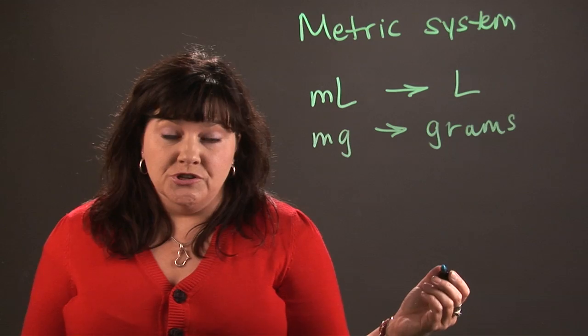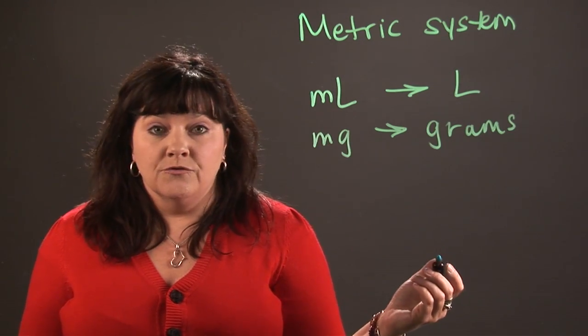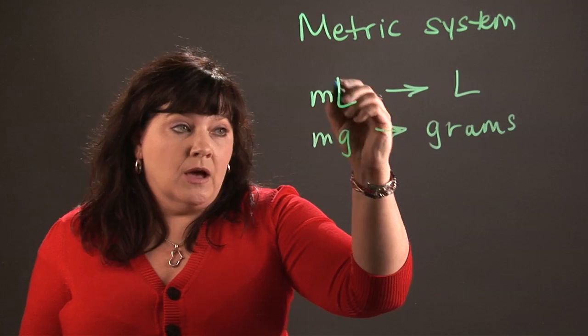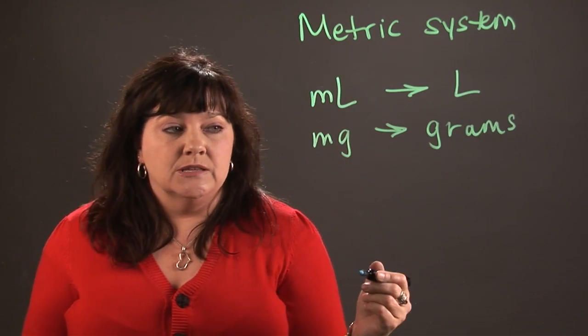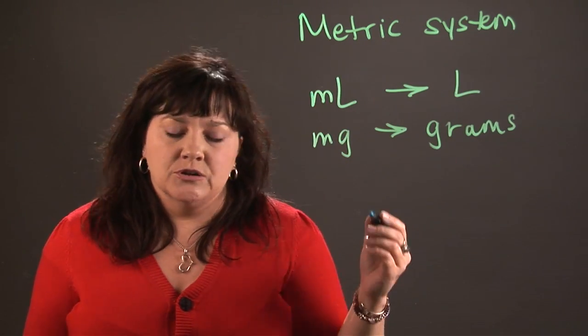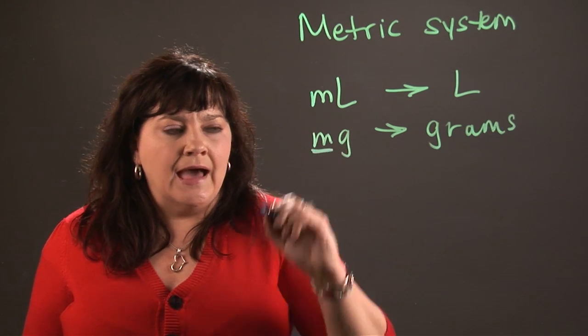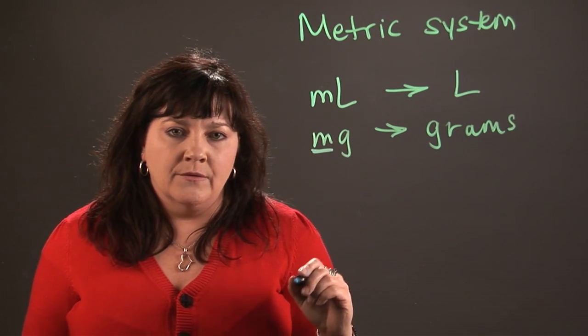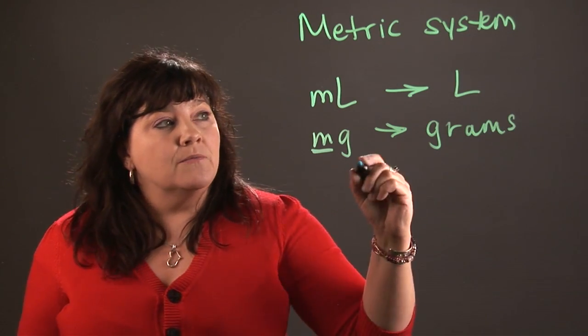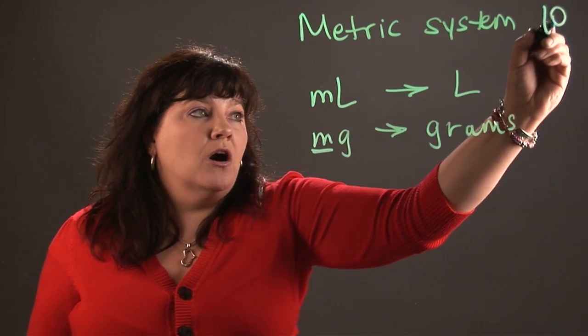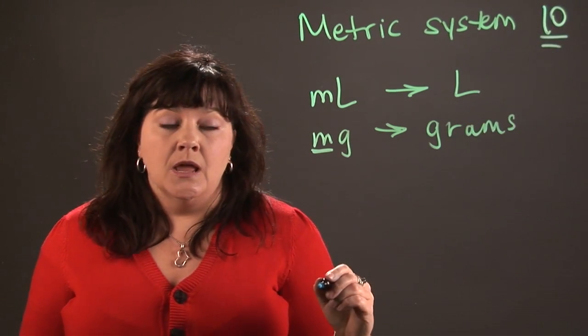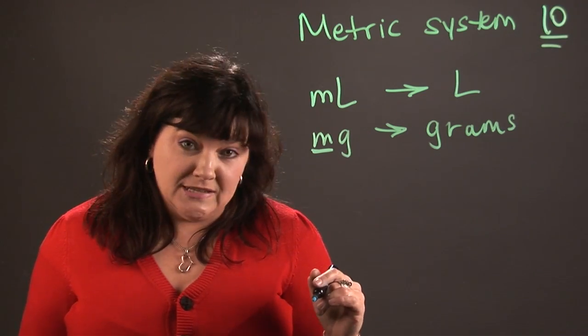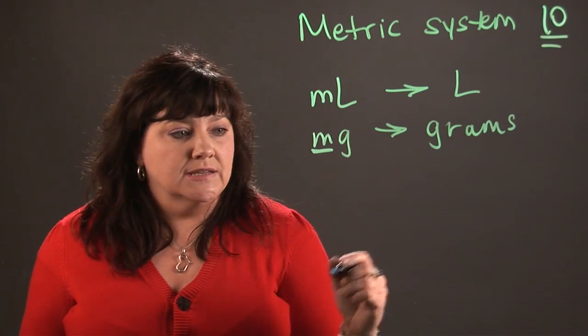To do the metric conversion, you have to look at what you're converting from and what you're converting to. For instance, when I'm dealing with milliliters to liters or milligrams to grams, I have to look at that prefix letter because that's going to tell me what my factor of 10 is. The metric system is all based on powers of 10, so doing metric conversions really only involves moving a decimal place.